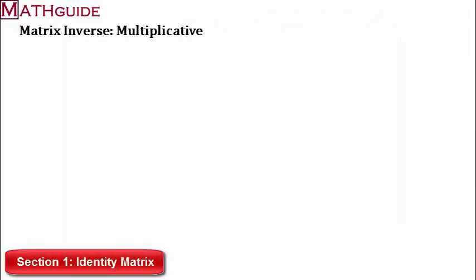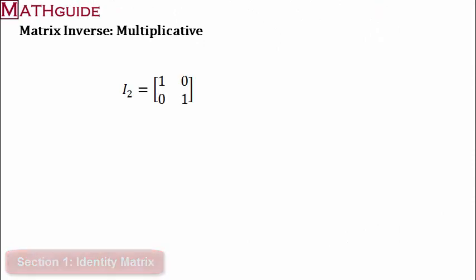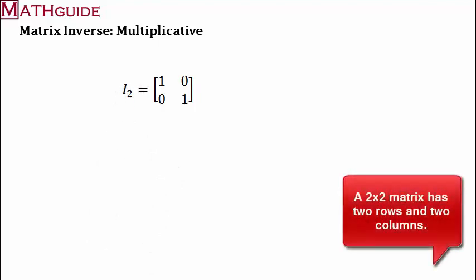Let's talk about what an identity matrix is. Here's a 2x2 identity matrix, and you'll see there's a little subscript of 2 right there. That subscript just means it is a 2x2. And you can see that there are ones along the diagonals, zeros elsewhere.